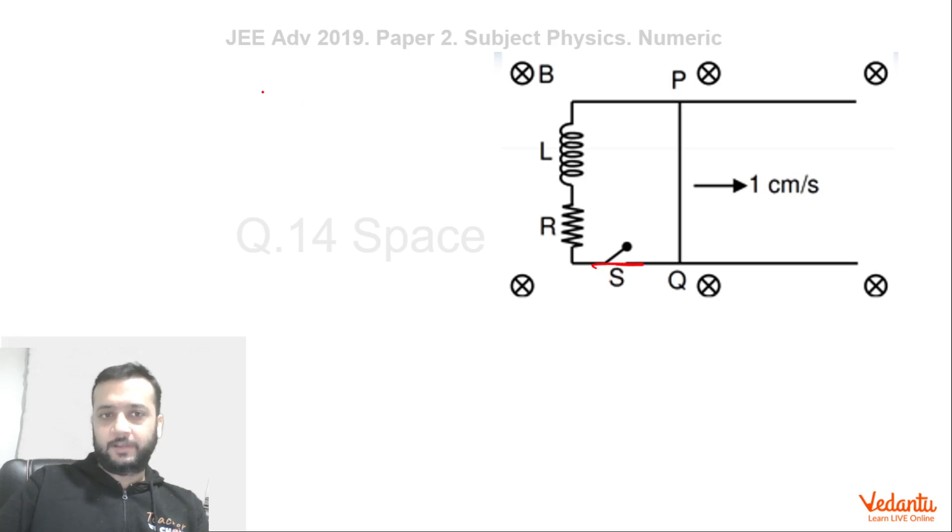So let's find the value of the induced EMF that will be BVL. Right. Because magnetic field, velocity and length are all mutually perpendicular to each other over here. So we can simply multiply these three terms.